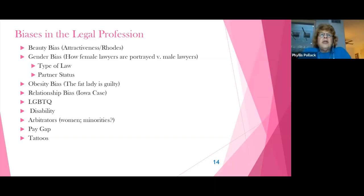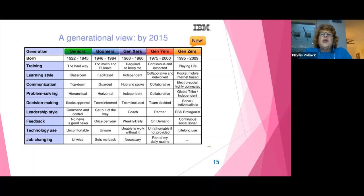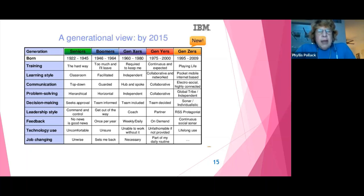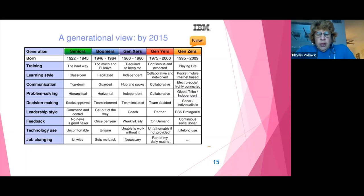Another bias I want to talk about is generational bias. This chart shows how different generations look at things differently. Generation X, Generation Y, Baby Boomers, and World War II vets will view life differently, and this can create a conflict. We make different assumptions based upon the times we grew up in and we have different values.